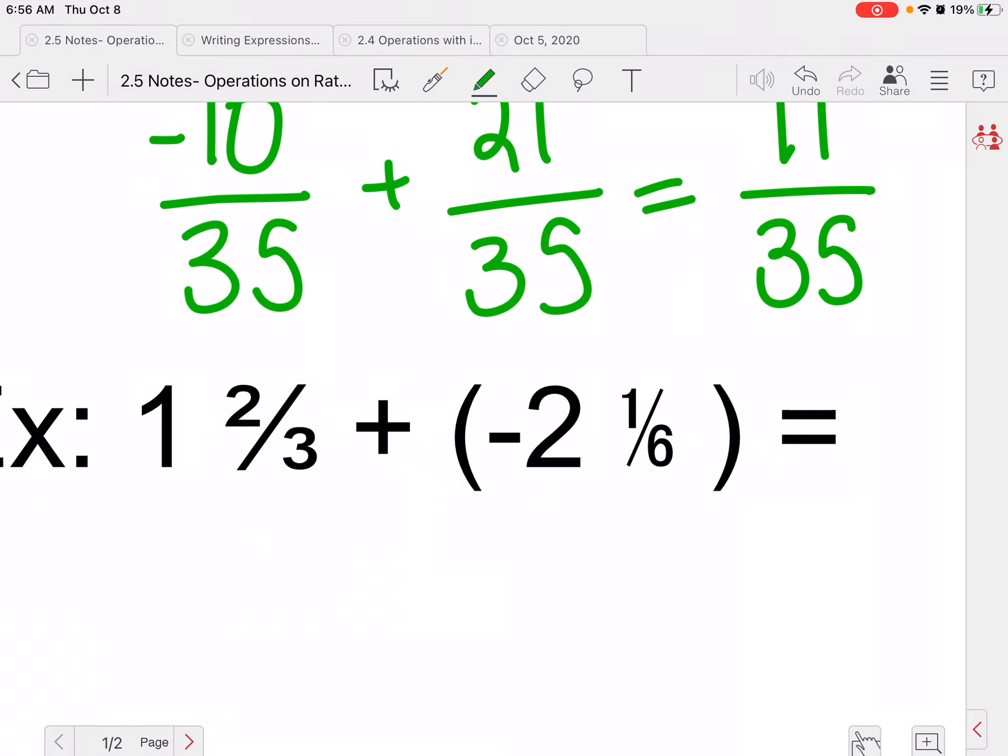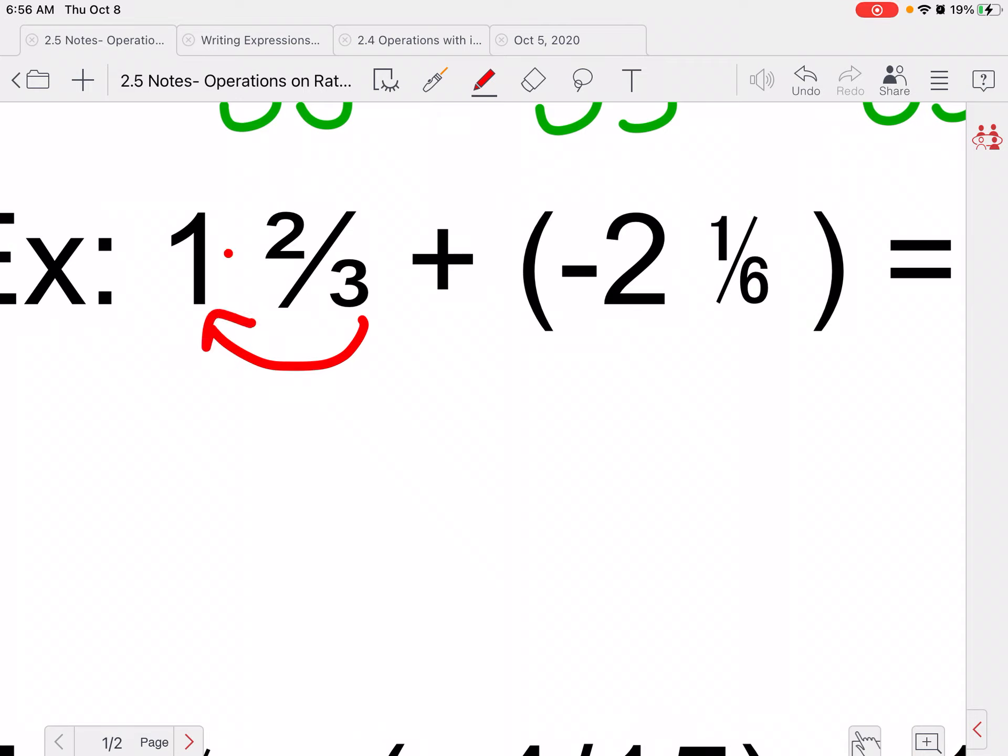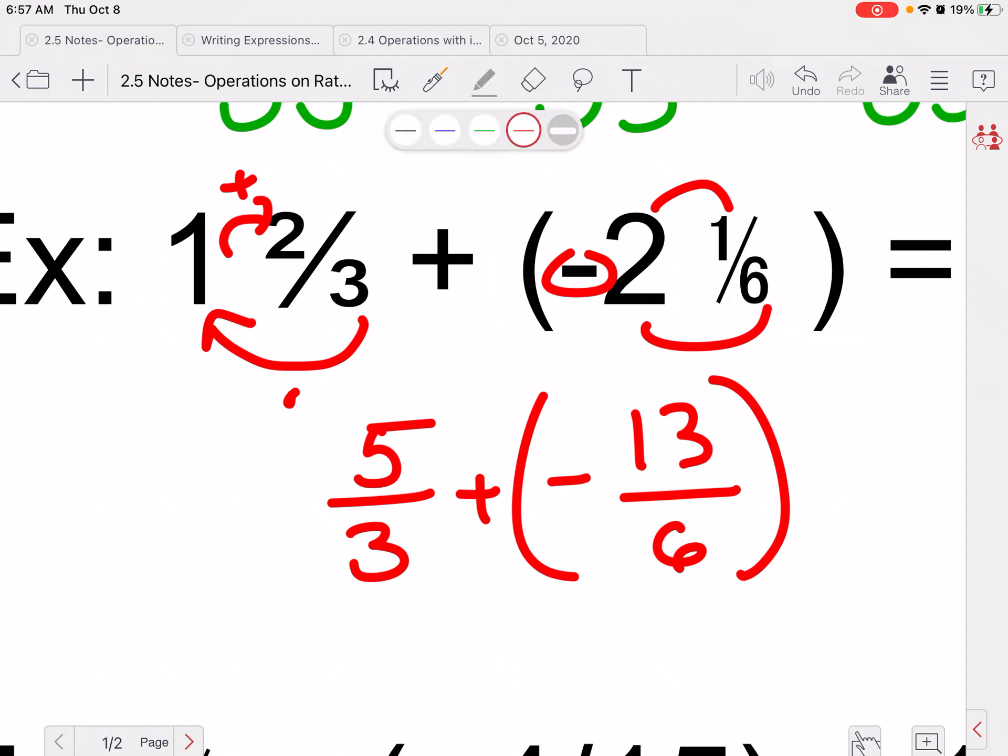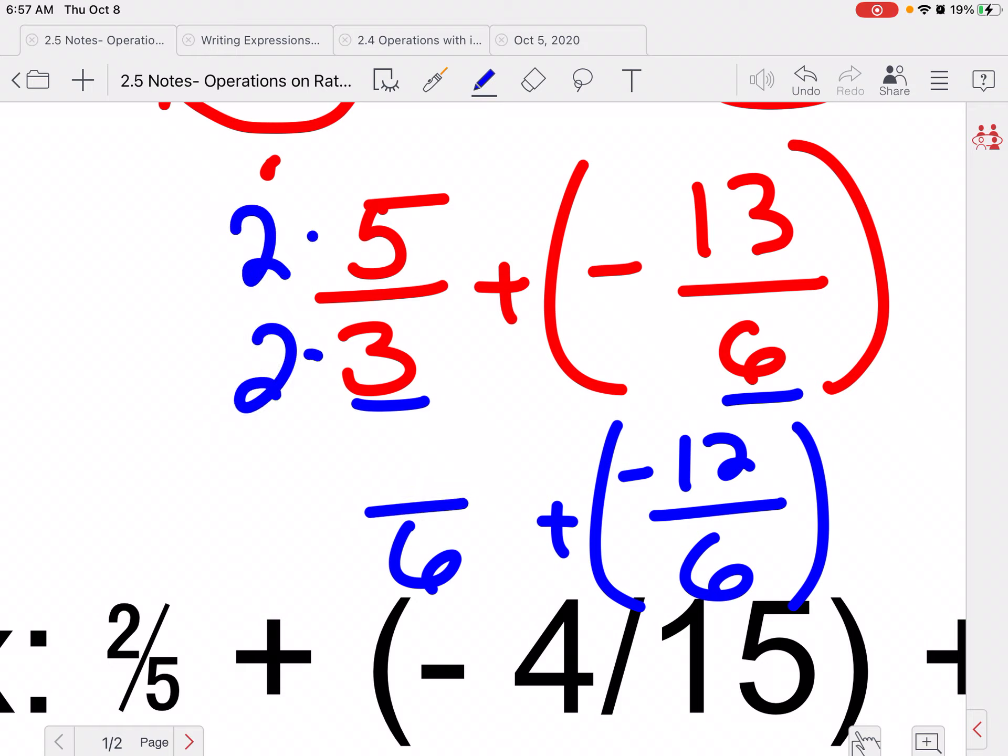Now, I would strongly recommend when we're looking at mixed numbers that we change them to improper fractions. So remember, we do 3 times 1 plus 2. So that would give me 3 times 1 is 3 plus 2 is 5. So 5/3 plus. Remember, when I'm converting with a negative, I just ignore it until I'm done. So 2 times 6 is 12 plus 1 is 13. So I'd have -13/6. And again, now I need to get a common denominator. So between 3 and 6. Again, I could use 18, but I'm going to use my lowest common denominator. And I'm going to use 6. So this guy is already at 6, which makes my life a little bit easier. And I have to multiply this bottom by 2 to get 6. So I have to multiply the top by 2. So I get 10.